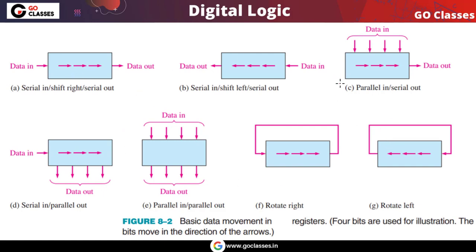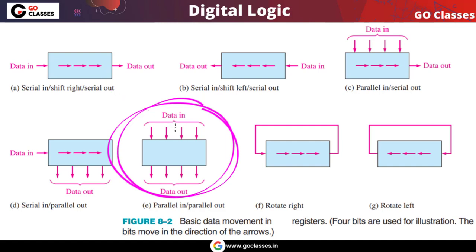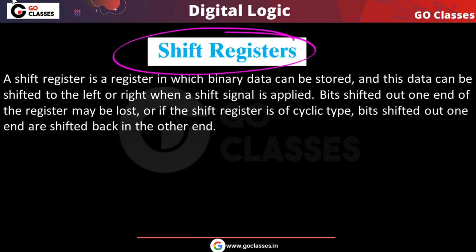We have already seen these categories in the last class. We have already seen this type of register — the parallel in parallel out register — where data is inserted in parallel and read in parallel. Now in this lecture we are going to study the shift register, which is a special type of register. The name itself tells you: we are shifting the data either to the left or to the right.